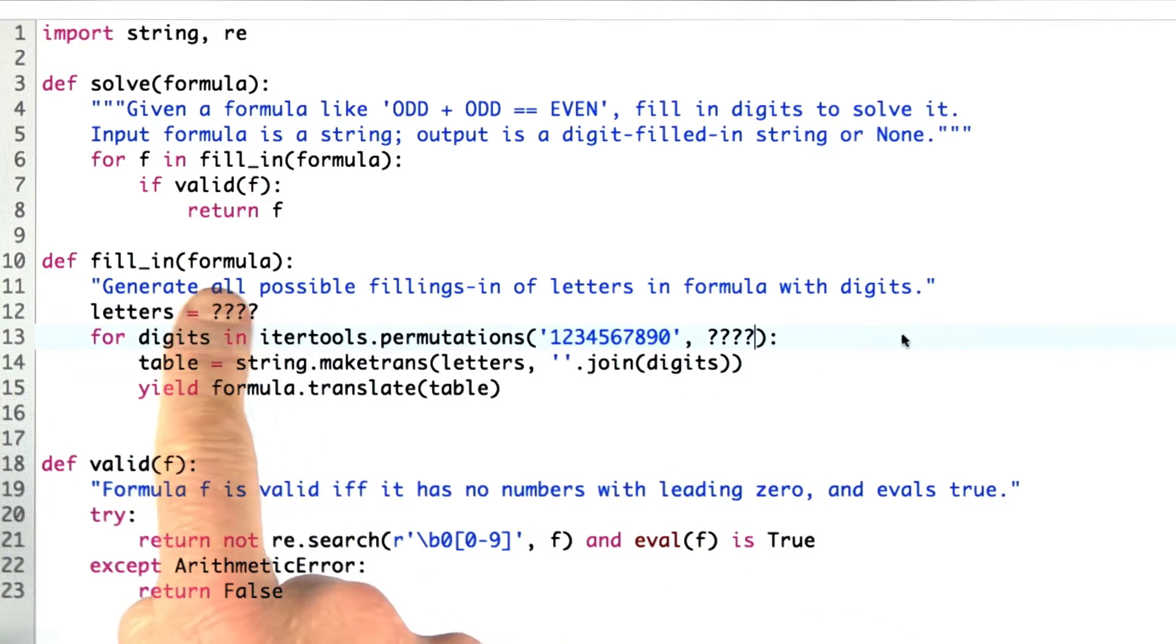So what does the fill-in function do? Well, first it finds all the letters in the formula, and I want you to fill in that piece, and then it iterates a collection called the digits, a permutation of the digits taken from all the digits, n at a time.